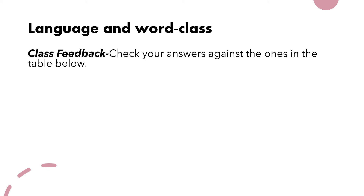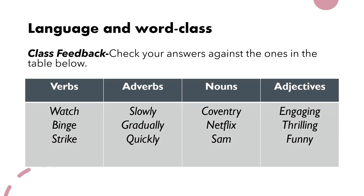Check your answers against the ones in the table below. We've got our four columns: verbs, adverbs, nouns, and adjectives. For verbs, we have watch, binge, and strike. For adverbs, we have slowly, gradually, and quickly. For nouns, we have commentary, Netflix, and Sam. And for adjectives, we have engaging, thrilling, and funny.